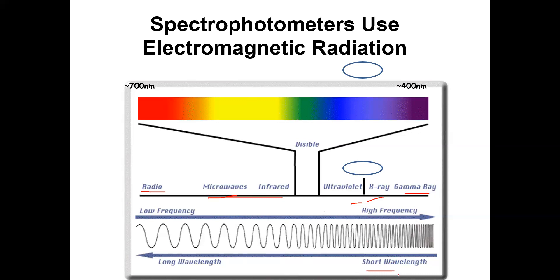To measure total protein concentration, one assay uses the 595 nanometer wavelength, which is in the visible spectrum — this is part of an assay called the Bradford assay. We can also use UV light, specifically at 280 nanometers. There are many other assays as well.